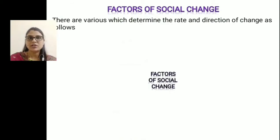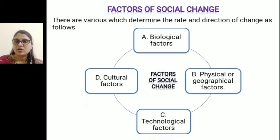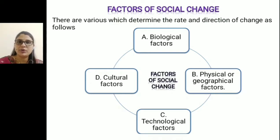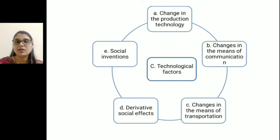There are various factors that determine the rate and direction of social change. The four major factors are: first, the biological factor; second, the physical or geographical factors; third, the technological factors; and fourth, the cultural factors. Under the technological factor, there are five sub-factors: change in production technology, change in the means of communication, change in the means of transportation, derivative social effect, and social invention.